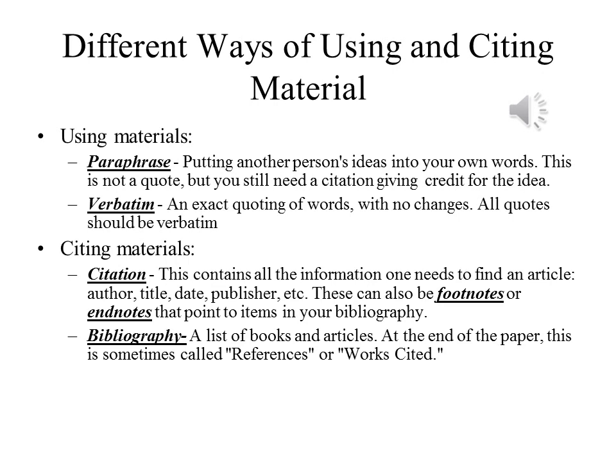A citation contains all the information that someone would need to find an article, a book, or whatever other source from which the material comes. This will typically include the name of the author, the title of the work, the date that it was published, the name of the publisher, and so on.